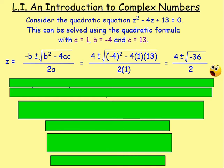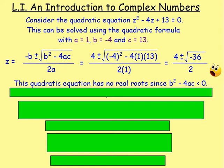We get the square root of a negative! What does that mean? Well, it means you can't go any further — the quadratic equation has no real roots, because you end up with the square root of a negative. This b² − 4ac is less than 0.